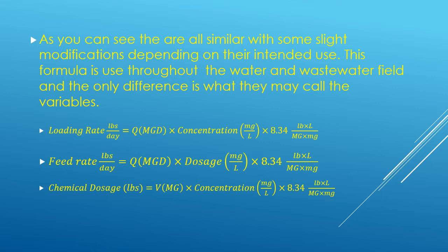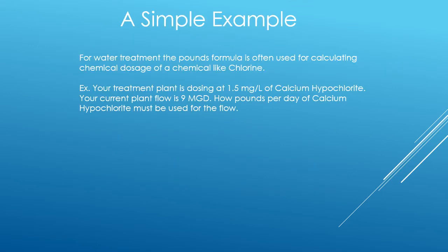As you can see, they're all similar and they all have their intended uses. This formula is a recurring occurrence in the water and wastewater field. The only difference is what they usually call the variables. Let's take a look at a simple example. For water treatment, the pounds formula is often used for calculating chemical dosage of certain chemicals like chlorine.